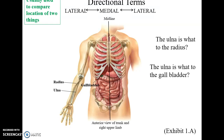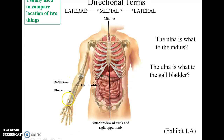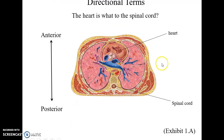Directional terms are useful because they allow us to describe the relative position of two structures. Lateral means further away from the midline, while medial means closer to the midline. For example, the ulna is medial to the radius because it is closer to the midline, while the ulna is lateral compared to the gallbladder.